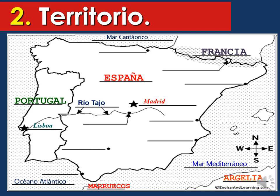Rio Tajo — 'Rio' means river, and 'Tajo' is the name of the river. This line on the map represents the main river of España, Rio Tajo. The Pirineos — these little triangles on the map represent mountains. These mountains, the Pirineos, are the ones that divide Francia from España.